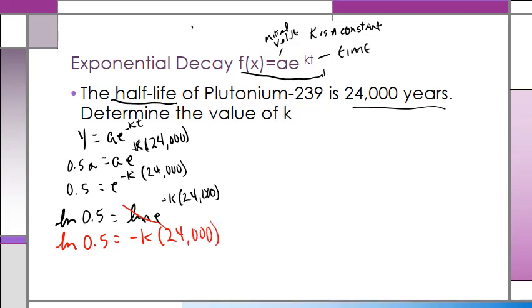Well, I could divide both sides by 24,000. So I've got LN 0.5 over 24,000 equals negative k. Well, I've got a negative k there, so I want to just go ahead and divide everything by negative 1.